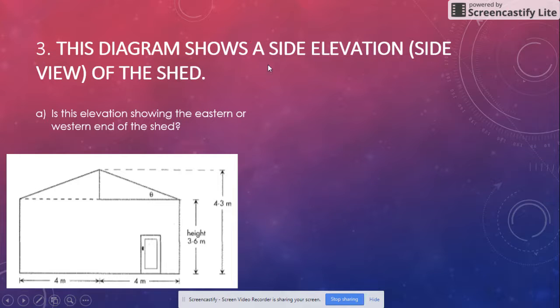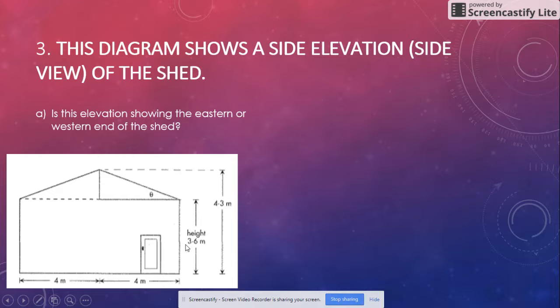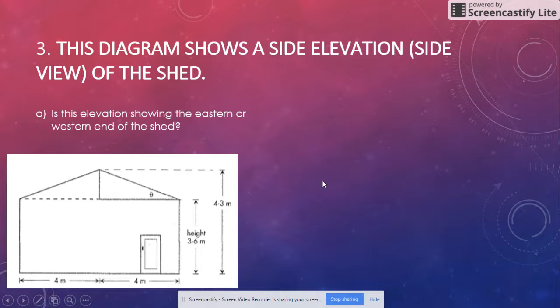This diagram shows the side elevation or the side view of the shed. Is this elevation showing the eastern or western end of the shed? Have a look. When we were looking, it said it's the side view. If we go back, there was a side door here. This is north. If we can see the side door, north-south, this is east, that's west. This will be the western view.